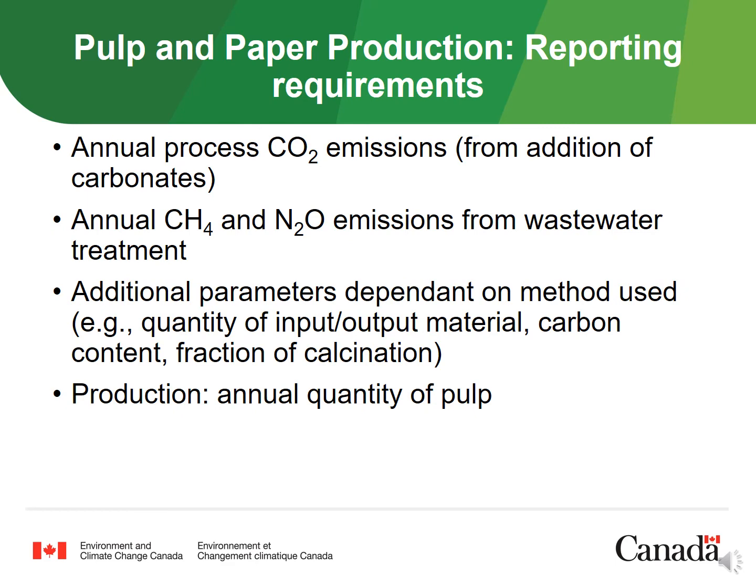With respect to reporting requirements, pulp and paper facilities must report annual carbon dioxide emissions from the addition of carbonates, as well as annual methane and nitrous oxide emissions from wastewater treatment. Some additional parameters are also required depending on the method chosen. These may include quantities and carbon contents of input and output carbonates, as well as the fraction of calcination achieved by carbonate type. Finally, the annual quantity of pulp produced must also be reported.